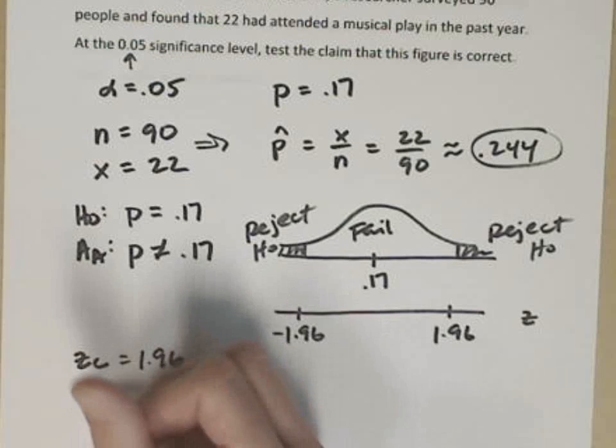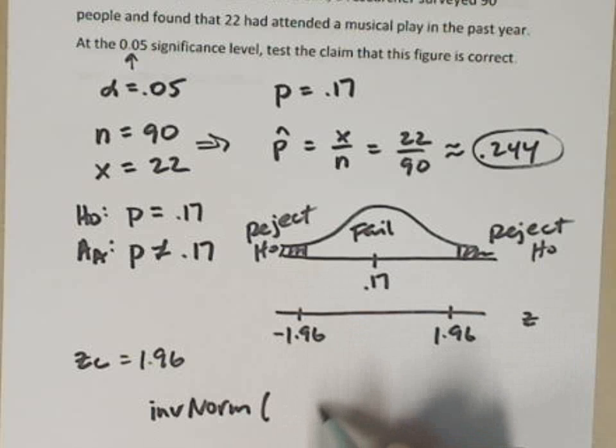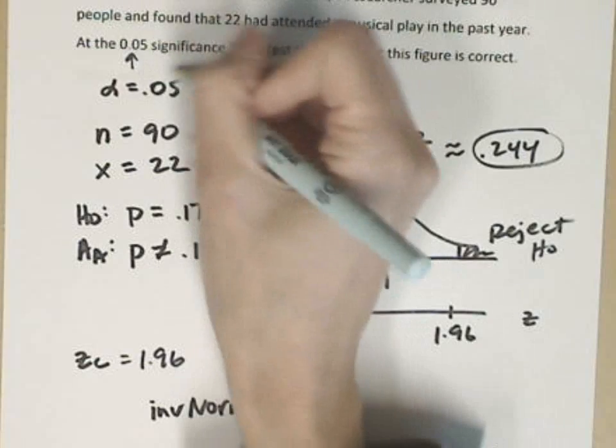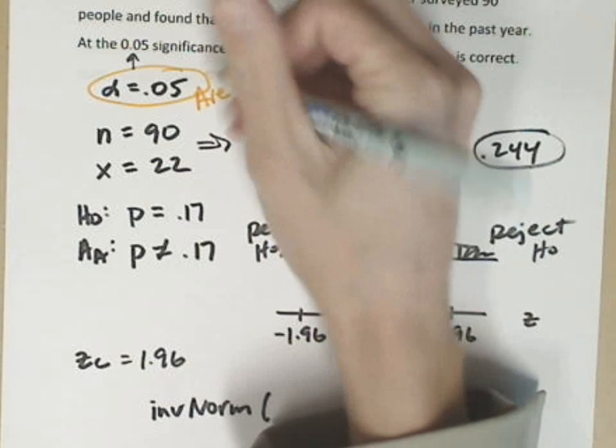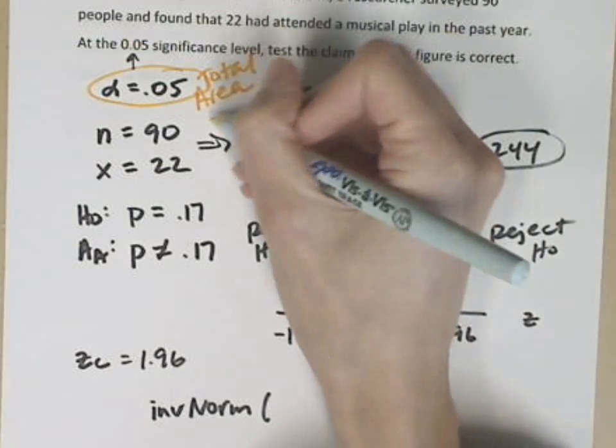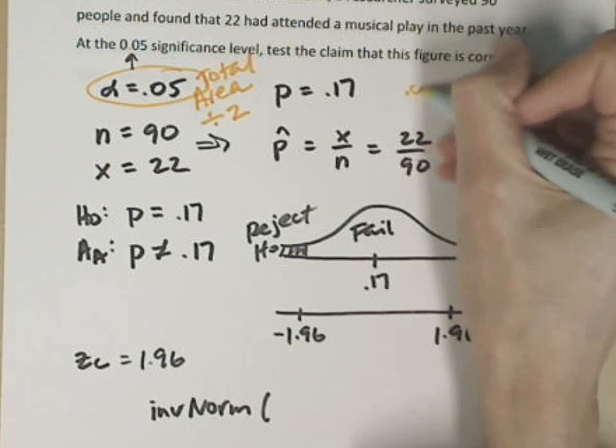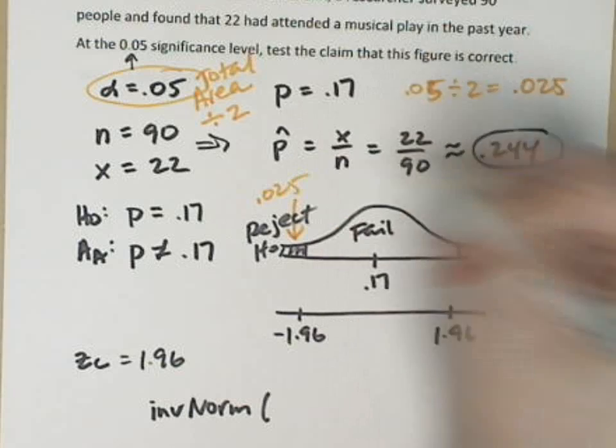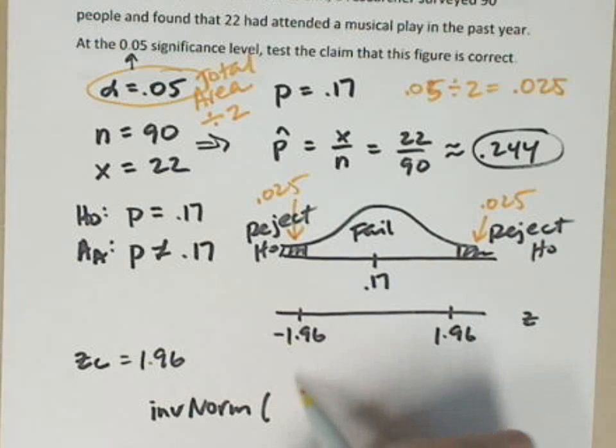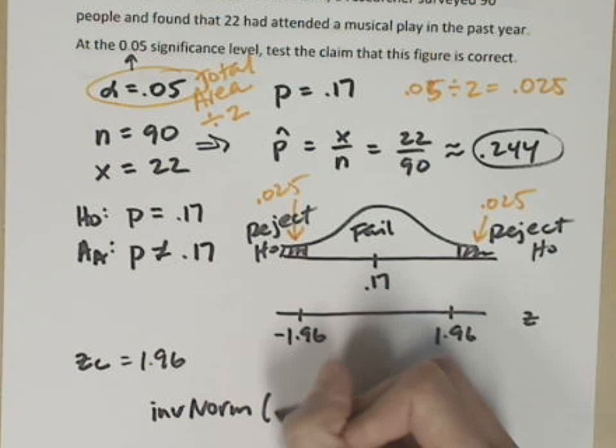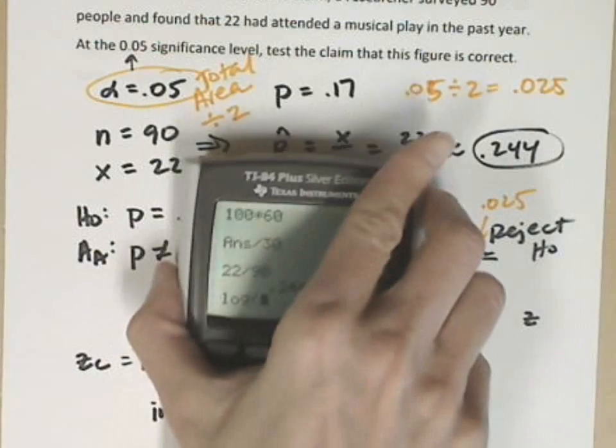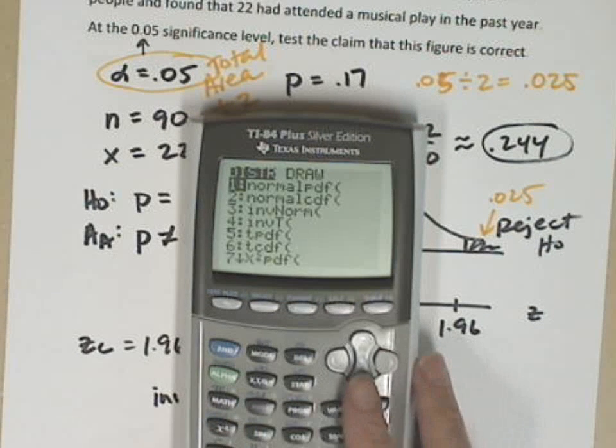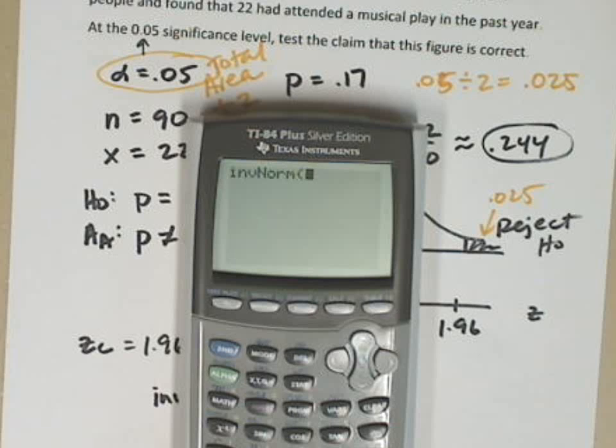The other way to figure that out is to use the inverse norm function on the calculator. The inverse norm takes an area from the left on the normal curve. As I'm checking this normal curve out and comparing it with my significance level, .05 is the total area of the rejection region, but it got divided into two sections, so I need to divide that area by two. So .05 divided by two is .025.